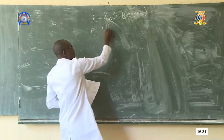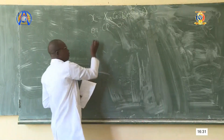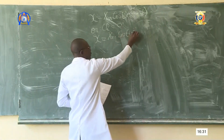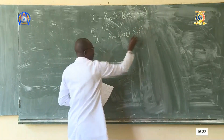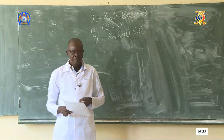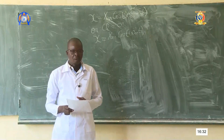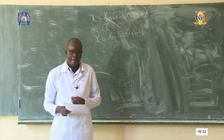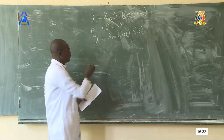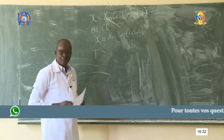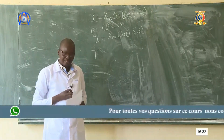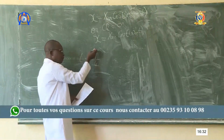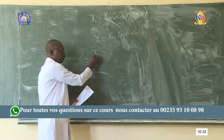On pose φ = 0, donc l'équation devient x = xm·cos(ω₀t). On nous demande de représenter cette courbe. Pour représenter, il faut d'abord calculer la période T, puis diviser la période par 4. Donc vous avez une durée t égale à la période divisée par 4.